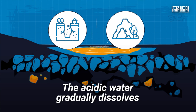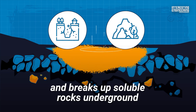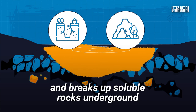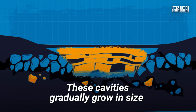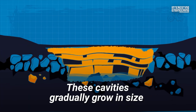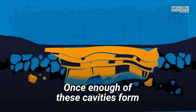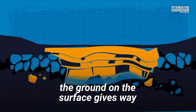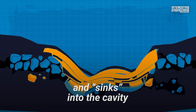The acidic water gradually dissolves and breaks up soluble rocks underground, creating cavities. These cavities gradually grow in size as more rock is dissolved. Once enough of these cavities form, the ground on the surface gives way and sinks into the cavity.